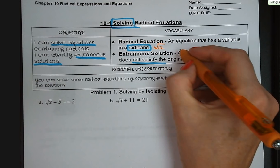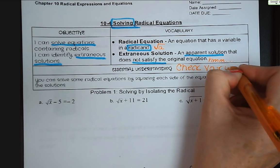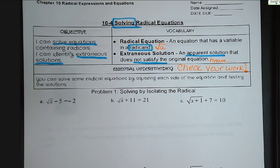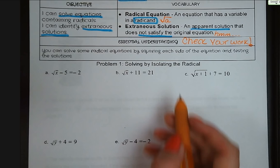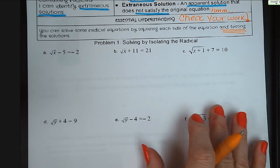Essential understanding: you can solve some radical equations by squaring each side of the equation and then testing the solutions to see which ones actually work. First problem: solving by isolating the radical. Before we do any squaring, we always want to get that radical all by itself on one side of the equal sign.